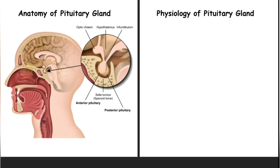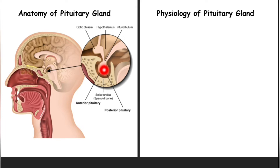The pituitary gland is located in the hypophysial fossa, which is found on the sphenoid bone. If you look here, this is the sphenoid, this fossa is the hypophysial fossa, and you can see the pituitary gland lodged here.